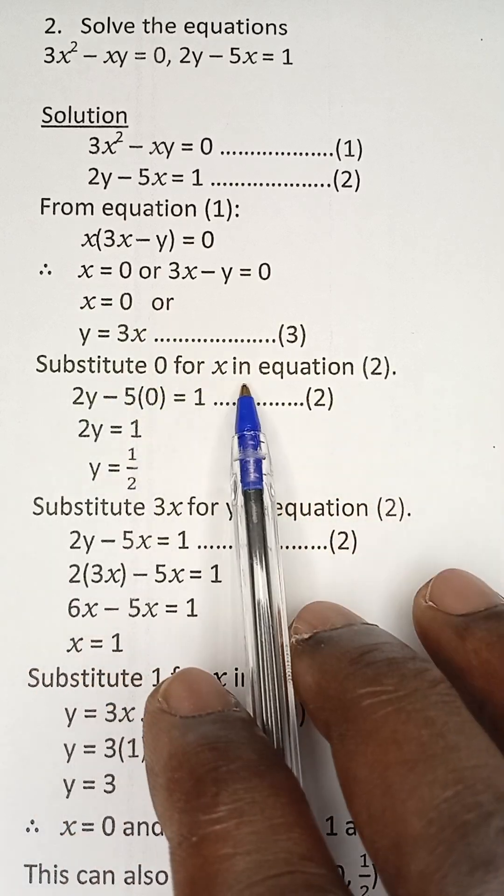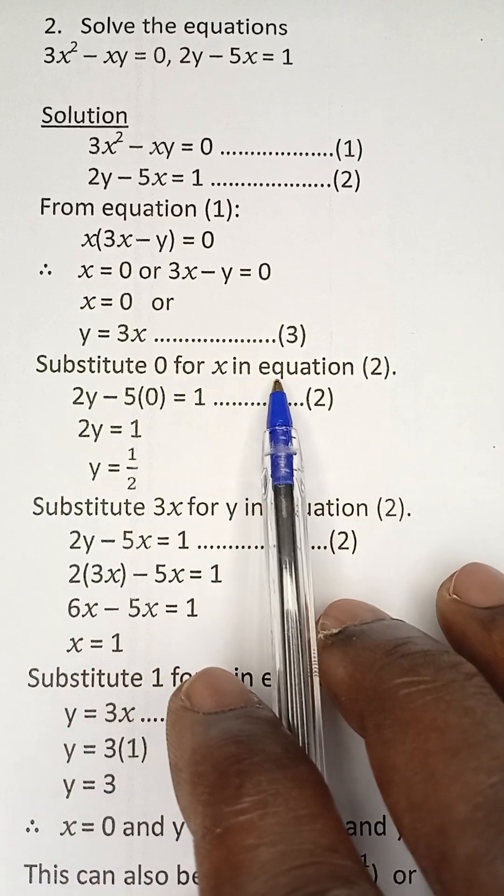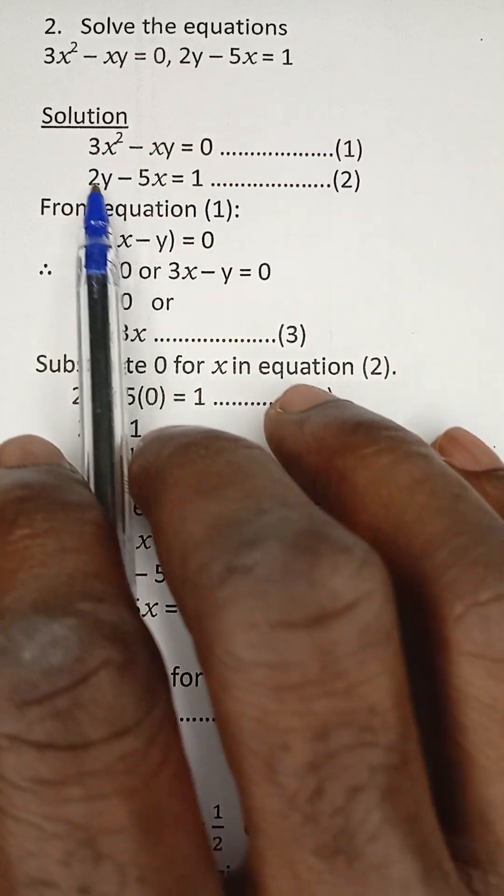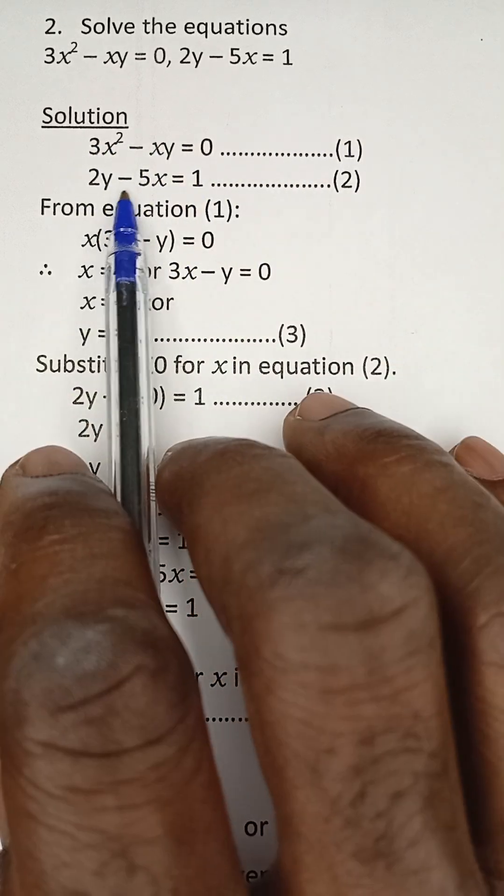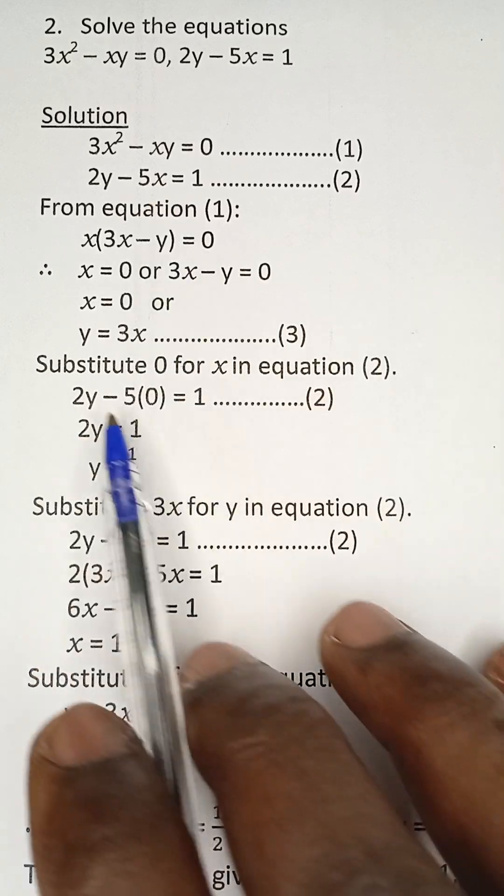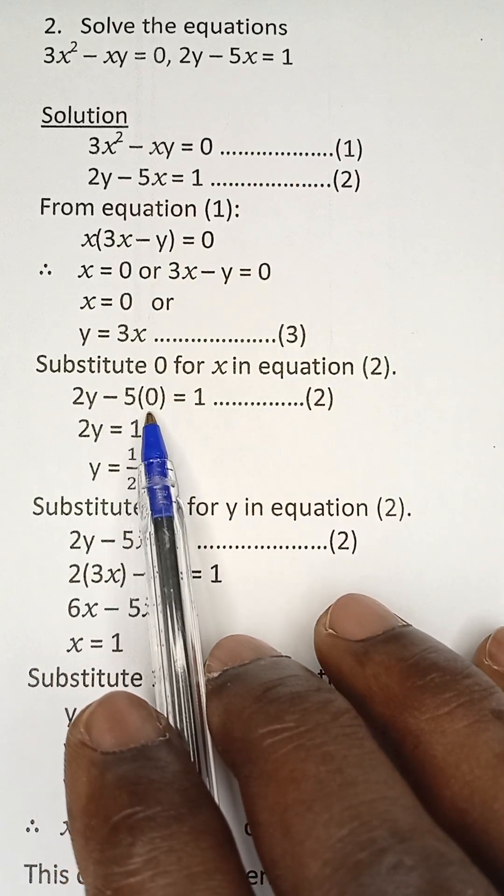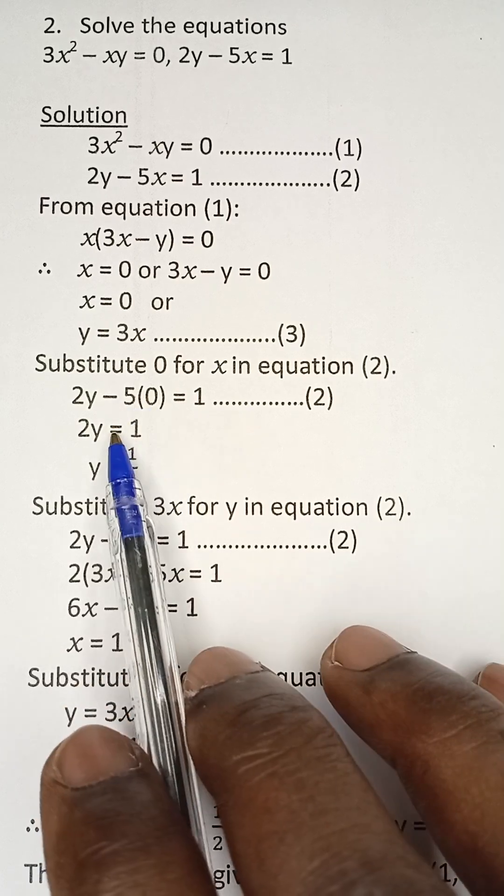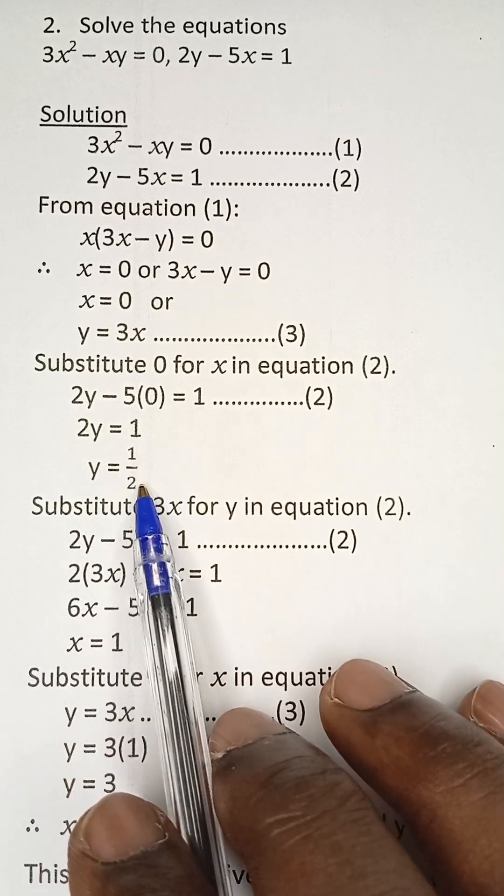When we substitute 0 for x in equation 2, don't forget we have just finished using equation 1. In equation 2, where we see x, we put 0. So we have 2y - 5(0) = 1. 2y equals 1, so y will be equal to 1/2.